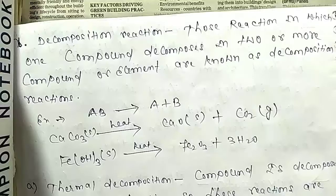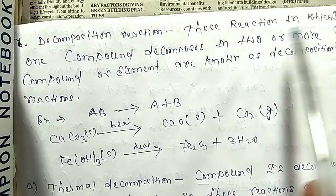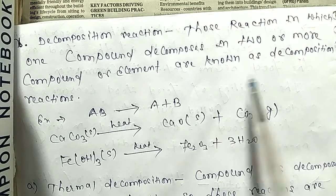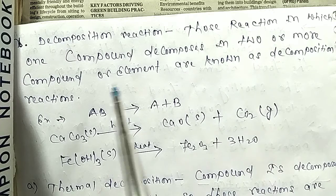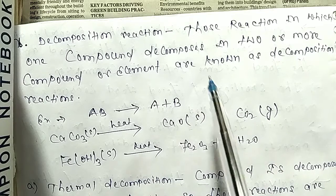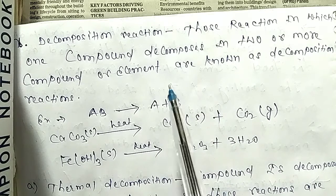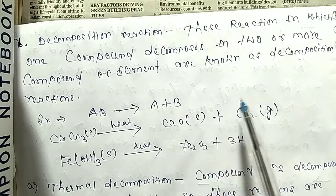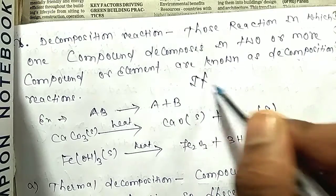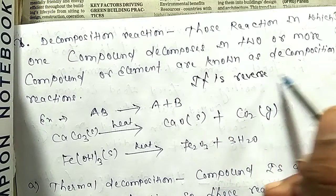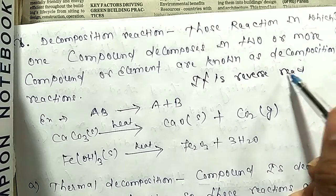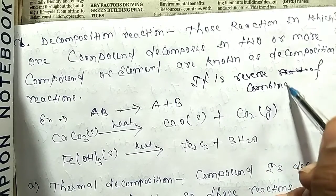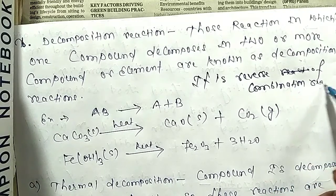Next is the decomposition reaction. Those reactions in which one compound decomposes into two or more compounds or elements are known as decomposition reactions. For example, AB decomposes into A plus B. It is the reverse reaction of combination reaction.